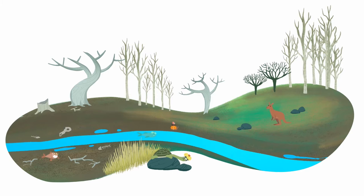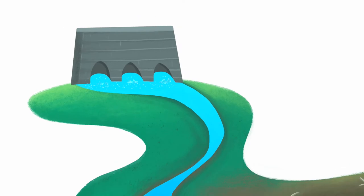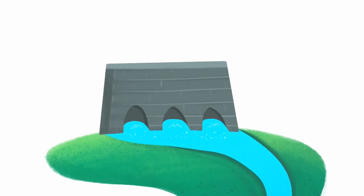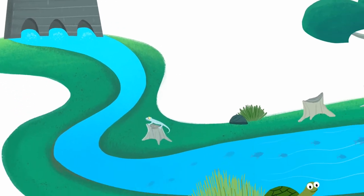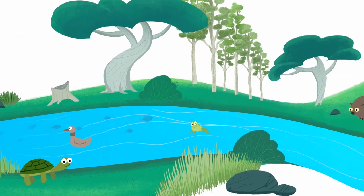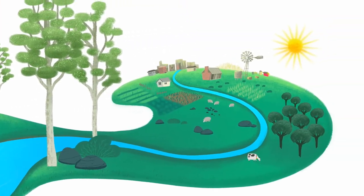These changes have affected the health and survival of native plants and animals. We're helping by releasing environmental flows from our dams into our rivers and wetlands and onto our floodplains.